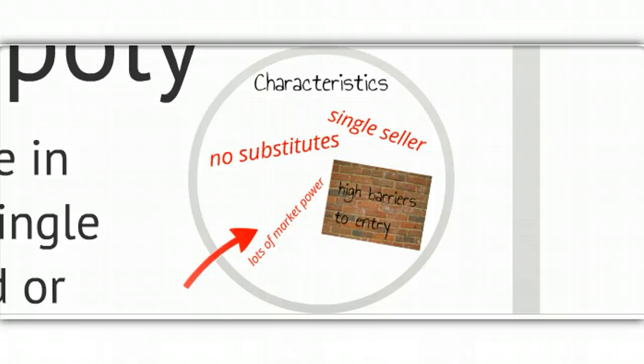The reason why there's just one seller is there are very high barriers to entry. Otherwise, more people would sell it because any place where profit could be had, people will want to enter that market. Think of that as like a big, tall brick wall. On the other side of the brick wall is the ability to start a business, but you have to get over that brick wall first. It's too high and it's too thick and you can't do it.